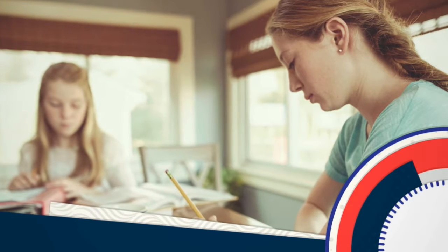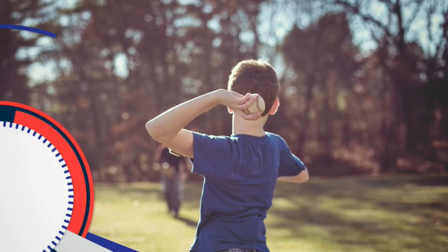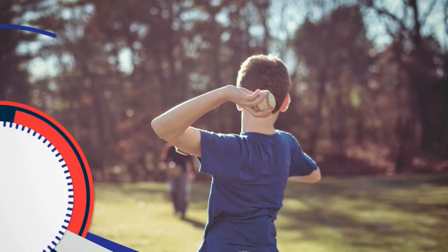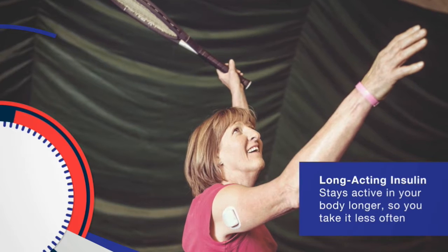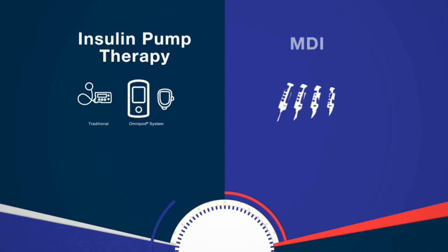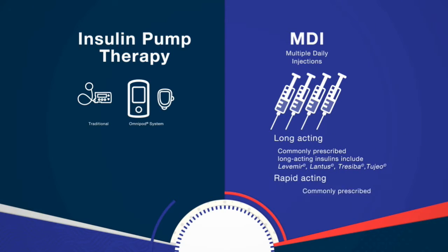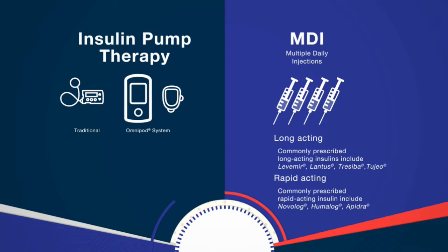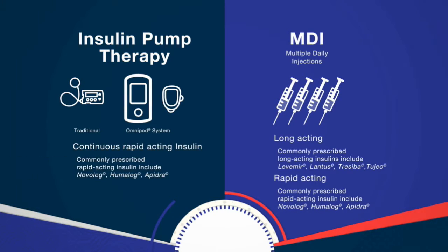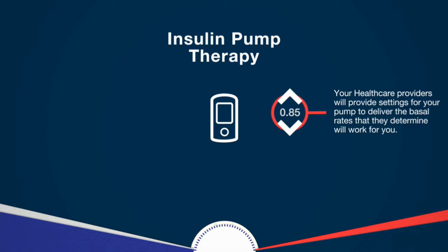In addition to understanding basal rates and bolus doses, you should know the different kinds of insulin and the different ways to take insulin. You may have used long-acting and/or rapid-acting insulin. Long-acting insulin stays active in your body longer, so you take it less often. Rapid-acting insulin stays active a shorter time, so you take it more often. When using MDI, healthcare prescribers commonly provide a long-acting and a rapid-acting insulin. With an insulin pump, only rapid-acting insulin is used and released continuously into your body. With pump therapy, you have better control over the amount and the rate at which insulin is released than with MDI. Your healthcare providers will provide settings for your pump to deliver the basal rates that they determine will work for you.